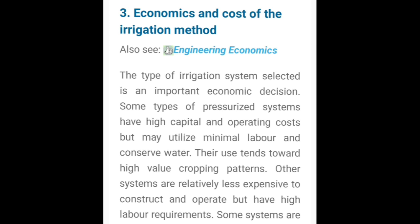Next हमारे पास economics and cost of irrigation method है — यह important है। जब आप किसी भी method का selection करते हो, सबसे पहले cost देखते हो। हम अपने budget के according irrigation method choose करेंगे। The type of irrigation system selected is an important economic decision. Some types of pressurized systems have high capital and operating costs but may utilize minimal labor and conserve water; they tend toward high-value cropping patterns. Other systems are relatively less expensive to establish.